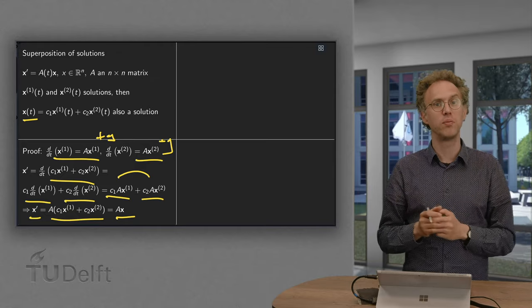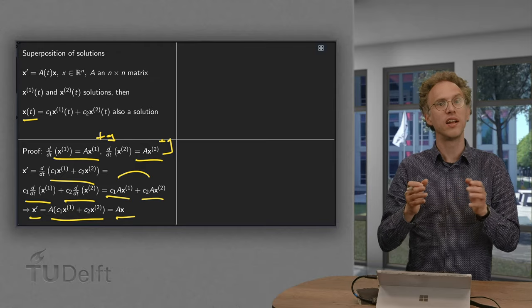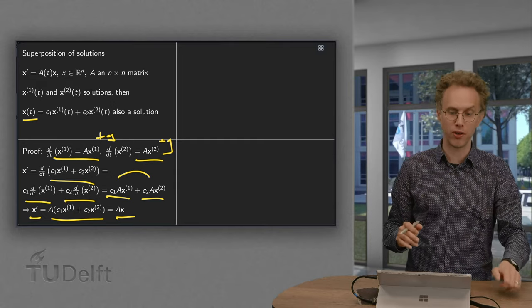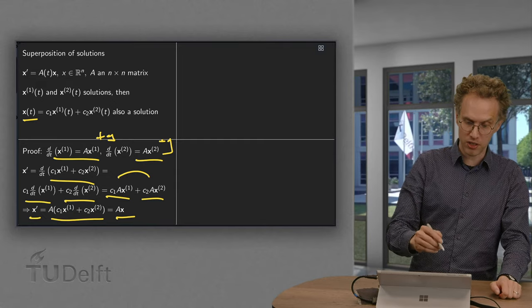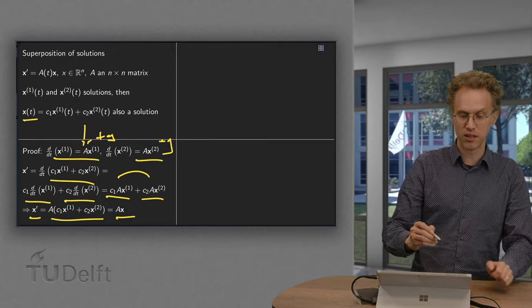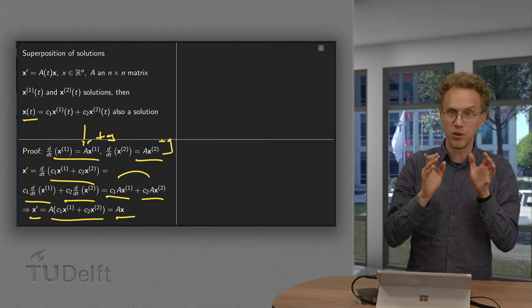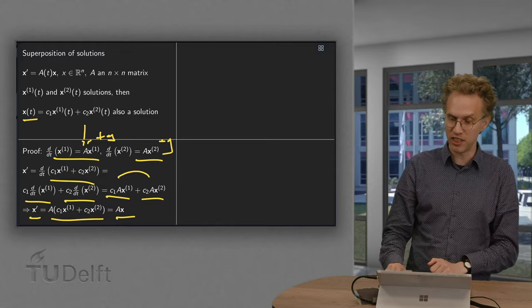And linearity, we need that. Because if you are non-linear and start to make non-linear combinations, you will generate all kinds of other terms. Because the A will then not only depend on t but also on x1 and x2. So you need both linearity and homogeneity.